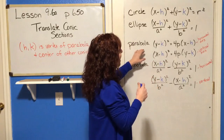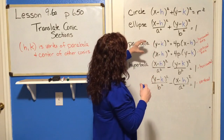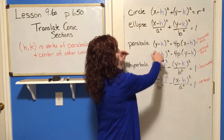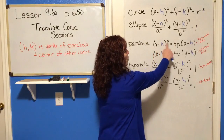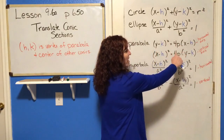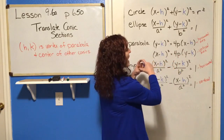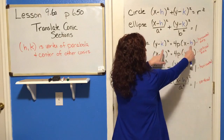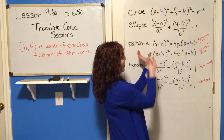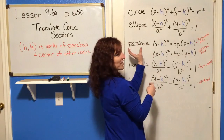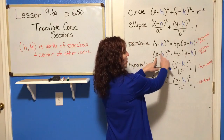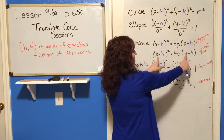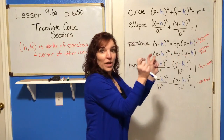With a parabola, if you've got a horizontal axis — meaning it opens left or right — then Y is still squared: Y squared equals 4 times P times X minus H. And if the axis is vertical, opening up or down, then X is squared and Y is not. You can identify H and K because they're attached to your X and your Y.